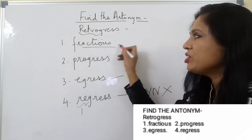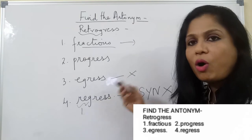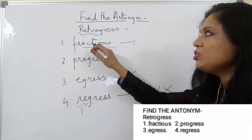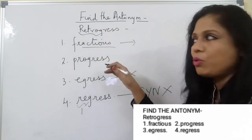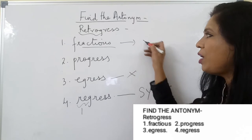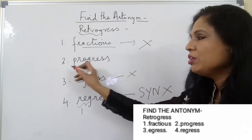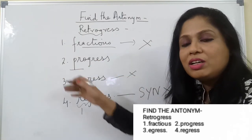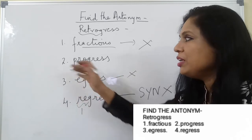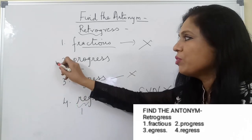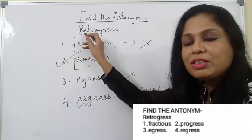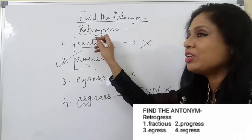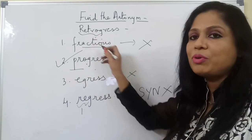The word 'fractious' means irritable or quarrelsome. It is not related to this word at all, so I will eliminate this also. The word 'pro' means ahead, so to move ahead is the meaning of the word 'progress'. Therefore, progress is antonymous to the keyword 'retrogress', and this is the answer.